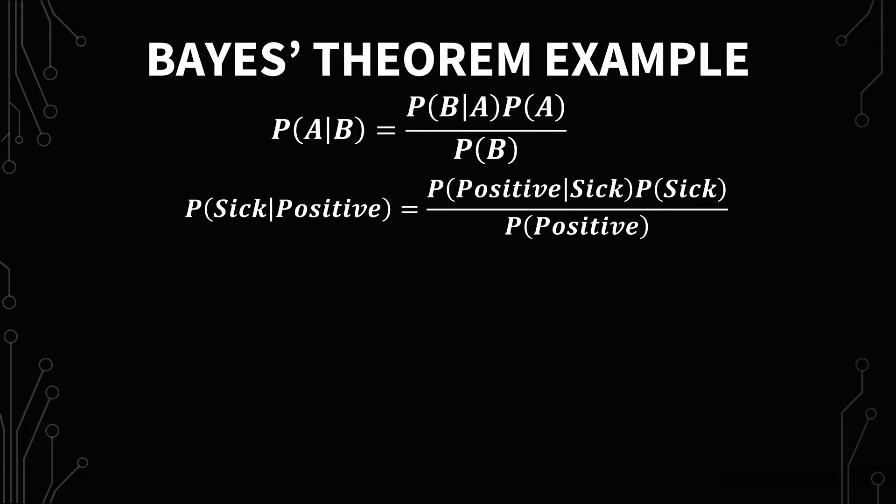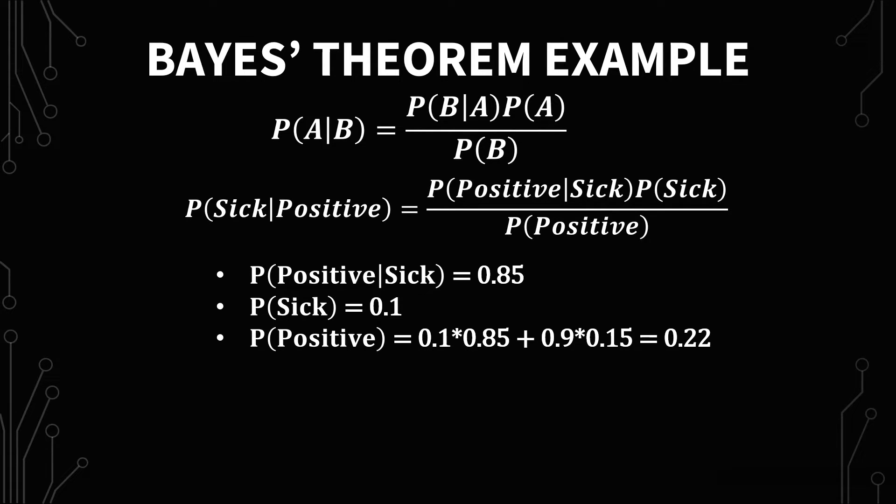We're given the probability of positive given sick as 85% or 0.85. We're also given the probability of sick, which equals 0.1. Finally, what we have is probability of being positive. Now, I have this calculation here. It's 0.1 times 0.85. So that's the numerator in our equation that we're trying to figure out. So where am I getting 0.9 times 0.15?